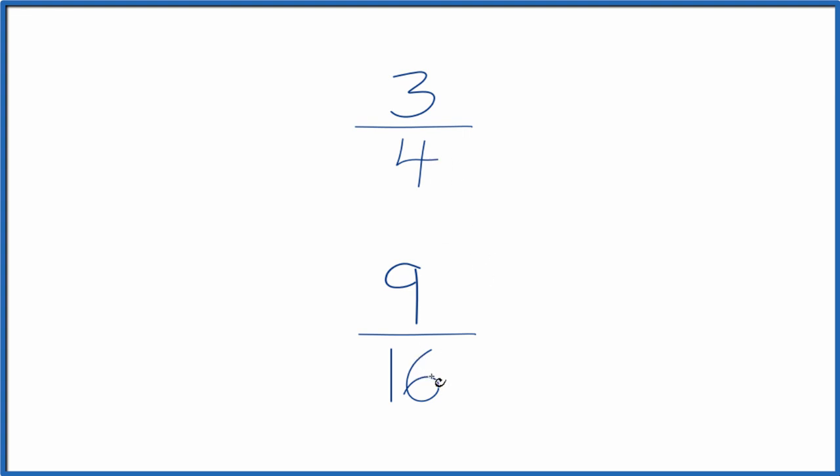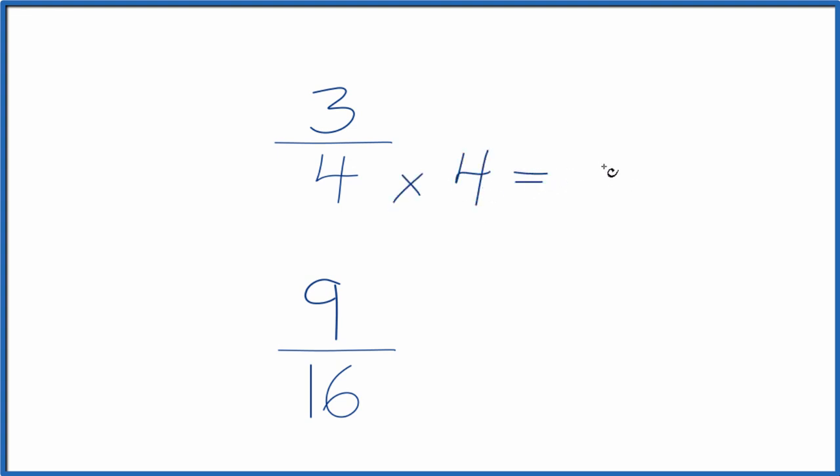Four goes into 16 four times, so let's just multiply 4 times 4. That'll give us 16 as our denominator here, and over here we already have 16, so we'll just call this 9 sixteenths.